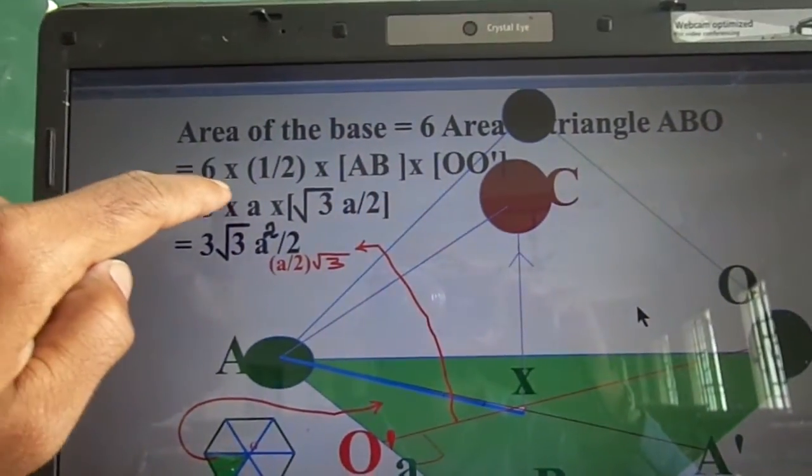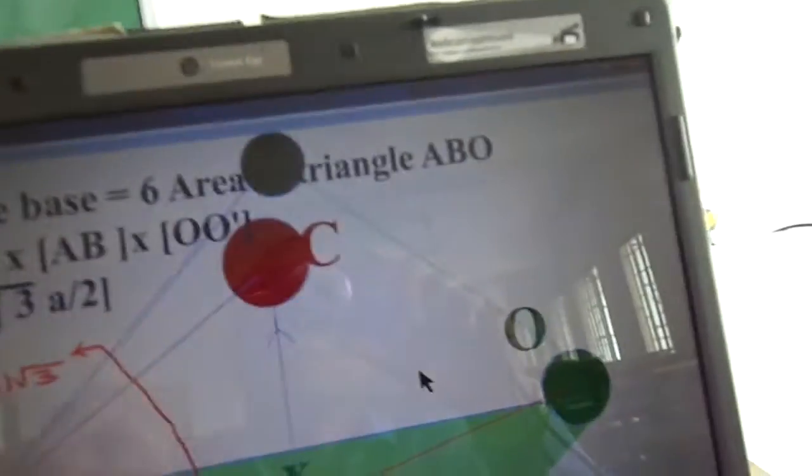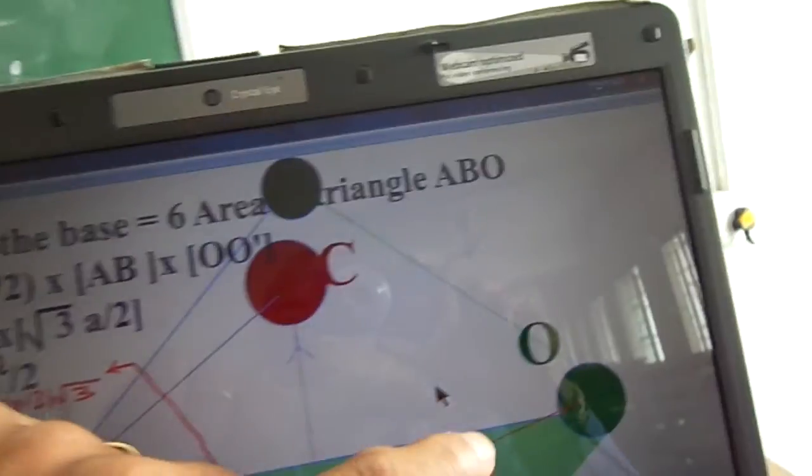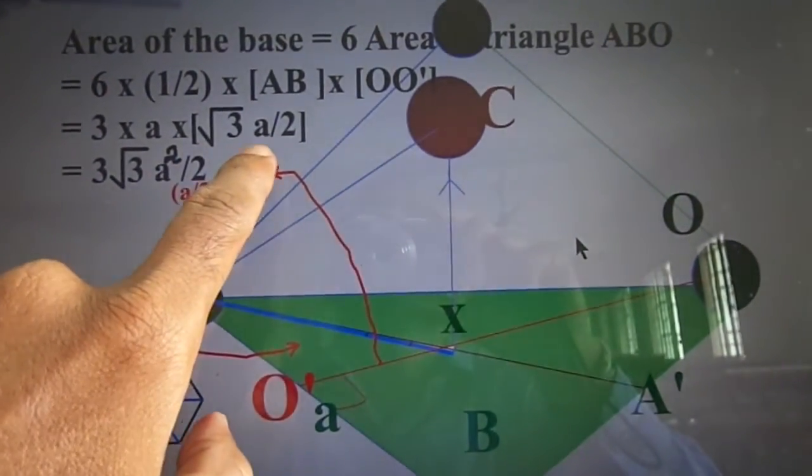So six into half B, H. B is maybe written as small a, lattice constant. And O, O' distance is √3a divided by 2.